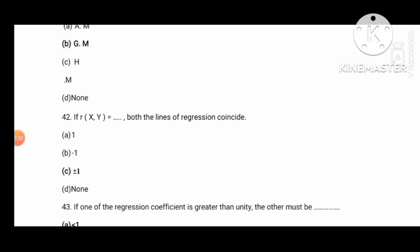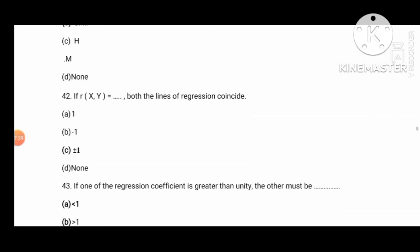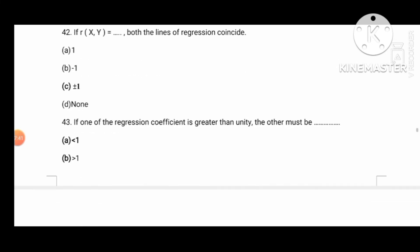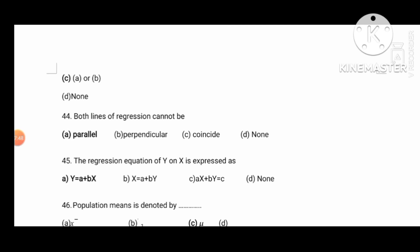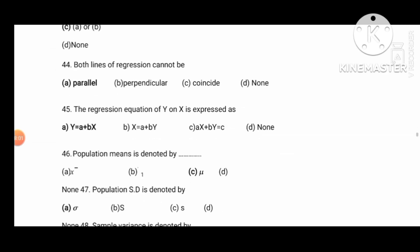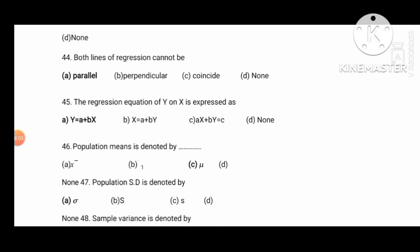Next question: if R of X, Y equals plus or minus 1, then both lines of regression coincide. If one regression coefficient is greater than unity, the other must be less than 1. Both lines of regression cannot be parallel. The regression equation of Y on X can be expressed as Y equal to a plus bX. The population mean is denoted by mu, and the population standard deviation is denoted by sigma. The sample variance is denoted by S squared.